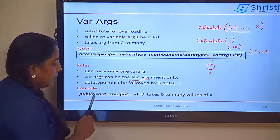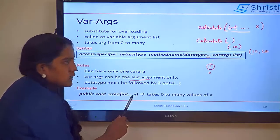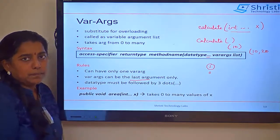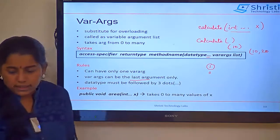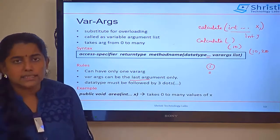See a simple example. Public void area int dot dot dot x. So, this is a variable argument. Can I write like this? Say, int dot dot dot x comma int y. No. This has to be the last argument.